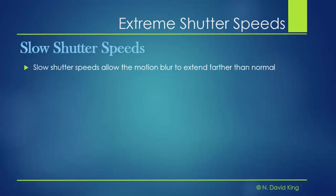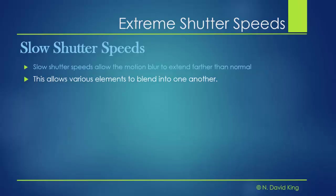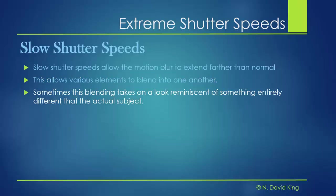Slow shutter speeds allow motion blur to extend farther than normal. In some cases that was a problem — the blur just erased all identity of what things were. But it can also allow various moving elements to blend into one another, creating a look that's very different from the reality of what we're seeing. This can be a really interesting technique if the subject is right.